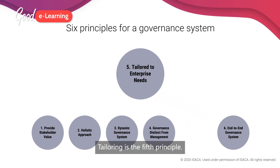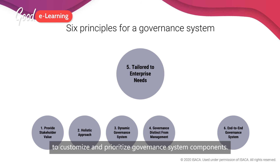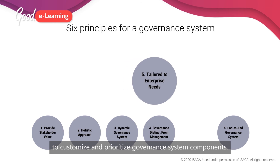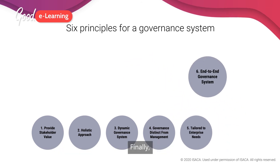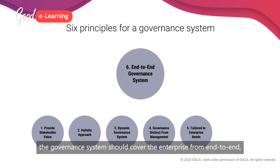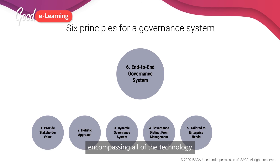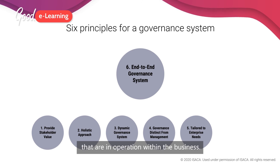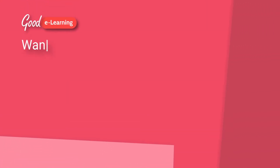Tailoring is the fifth principle. A set of design factors should be used to customize and prioritize governance system components. Finally, the governance system should cover the enterprise from end to end, encompassing all of the technology and information processing capabilities that are in operation within the business.